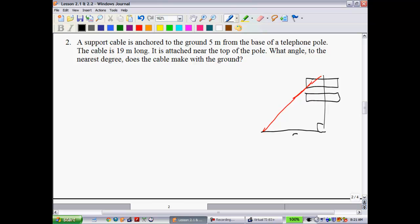What do we know about it? Well, they tell you it's 5 meters from the base. And they tell you this cable is 19 meters long. They want, what is the angle to the nearest degree does the cable make with the ground? So this is going to be the angle that we're looking at right here. Now, normally when we're dealing with an unknown angle, when a triangle is not labeled, we'll call it theta. Theta is just kind of like a zero with a line through it.